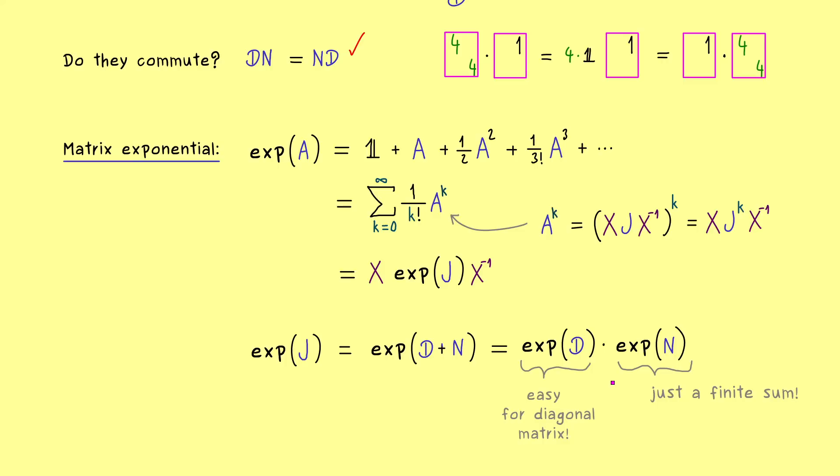However, the term nilpotent actually means, that the powers are eventually equal to the zero matrix. So for this one, you only have to calculate a finite number of powers. Therefore now instead of calculating an infinite series of a lot of matrix multiplications, now you just have to calculate a finite number. So you see, the power of the Jordan normal form makes this matrix exponential computable.